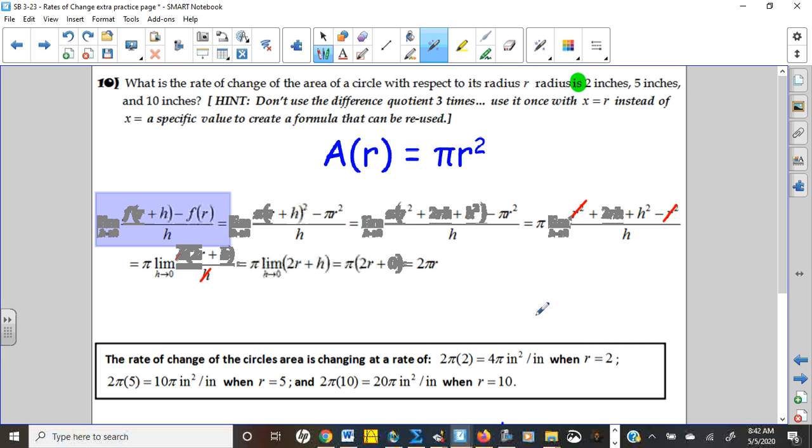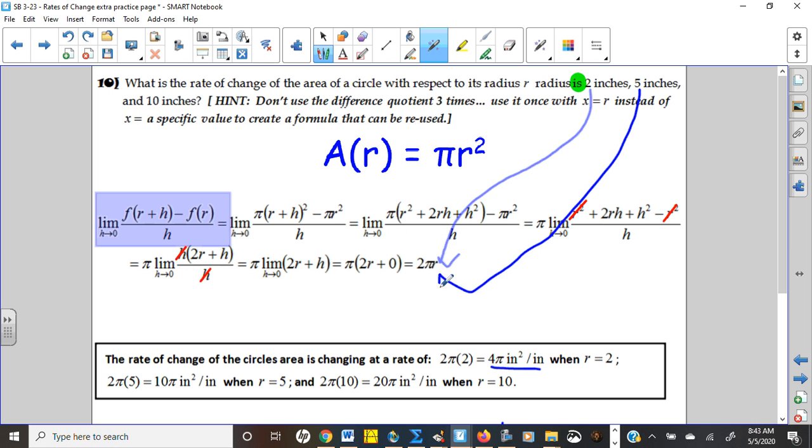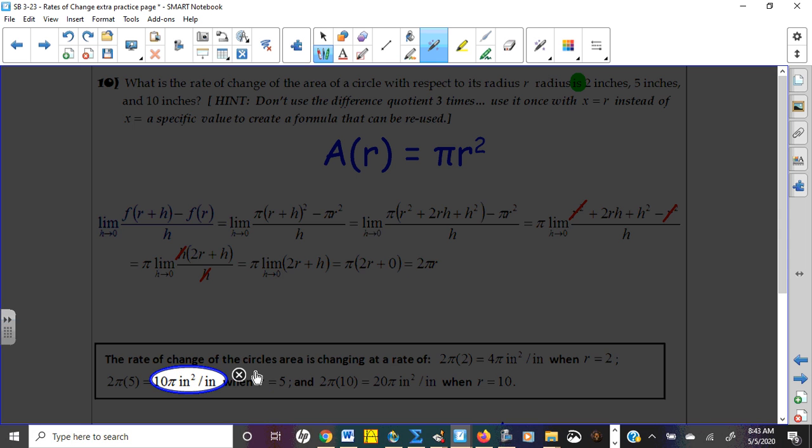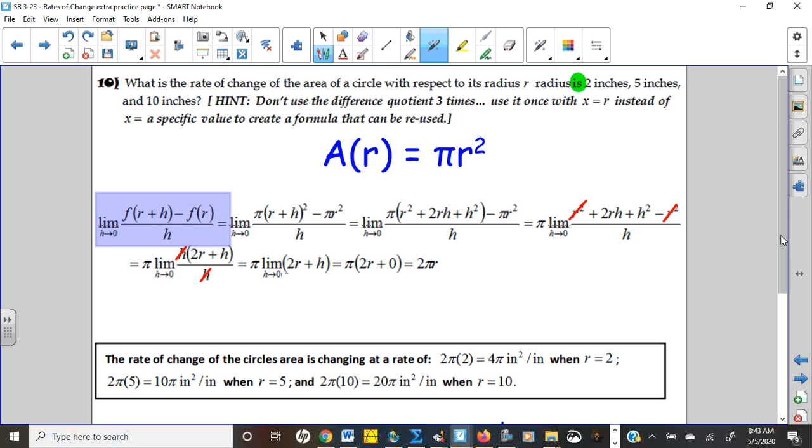And so if I wanted to know it at two, I would plug a two in. Two times pi times two is four pi. And that was the answer there, four pi inches, square inches per inch of radius. The area is changing at that point. Plug a five in. Two times pi times five is ten pi. Sure enough, that's what we got there. See how much faster that is if you have to do it multiple times.